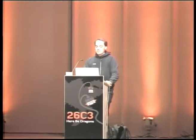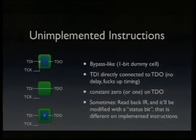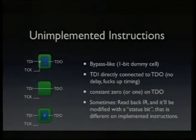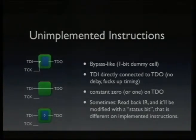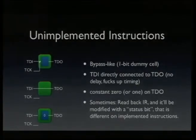Unimplemented instructions are usually implemented in one of three ways. One common way is to treat them as bypass, using a one-bit cell with no functionality. Another way is that TDI and TDO are connected directly without a flip-flop in between. The problem with this is that propagation delays add up across a large scan chain with many chips, limiting JTAG speed. That's why the bypass cell is typically preferred — it only costs one extra clock cycle.